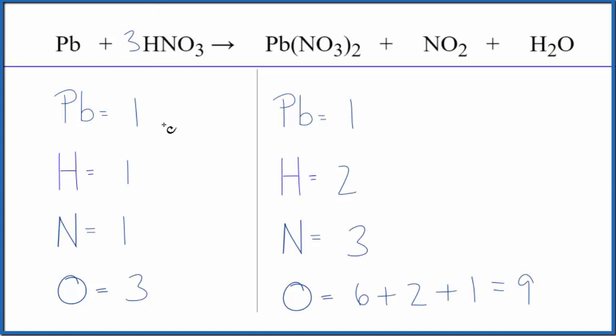So now we have one times three. That'll give us three hydrogen atoms. And then one times three. That balances the nitrogens. And then the oxygens, three times three. That gives us nine.